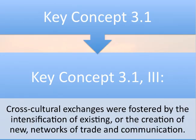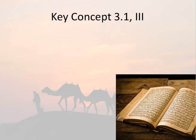Key Concept 3.1, Roman numeral 3 says cross-cultural exchanges were fostered by the intensification of existing or the creation of new networks of trade and communication. When we talk about new networks of trade and communication, we are talking mostly about Islam. Make a note that Islam is the fundamental idea running through this entire period — its emergence is going to affect everything from mercantile activity, military expansion, political diffusion, and cultural diffusion. It impacts most of Afro-Eurasia during the time period, and its importance cannot be overstated.